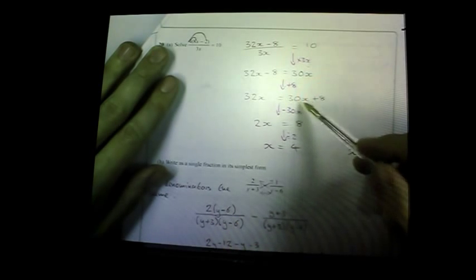Question twenty: solve the equation. Multiply out the brackets: 4 times 8x = 32x, and 4 times −2 = −8. Multiply both sides by 3x to clear the fraction, giving 32x − 8 = 30x. Add 8 to both sides: 32x = 30x + 8. Subtract 30x: 2x = 8, so x = 4.